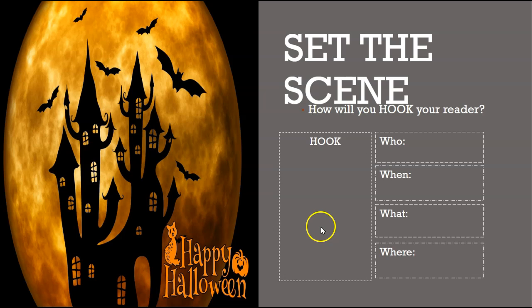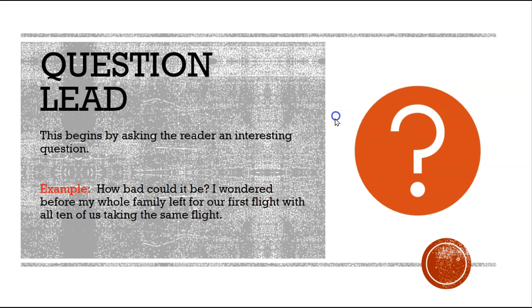You want to hook. You want to talk about who, when, what, and where. Something like this: you want to start with a question. This begins by asking the reader an interesting question. For example, 'How bad could it be, I wondered, before my whole family left on our first flight with all 10 of us taking the same flight.' That's just an example. Obviously your question has to deal with Halloween, right? You're not asking a question for an opinion.